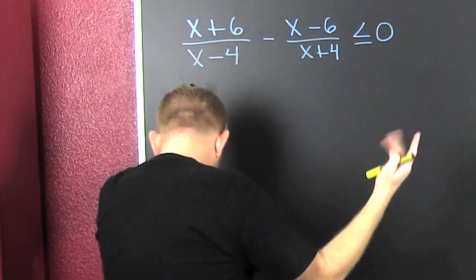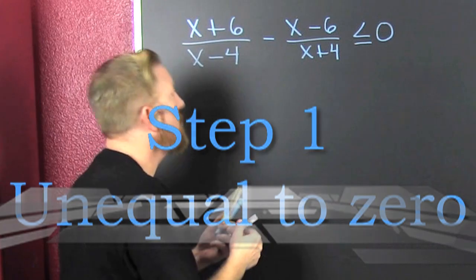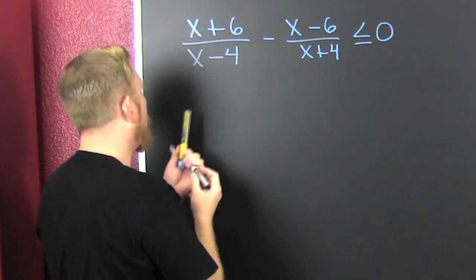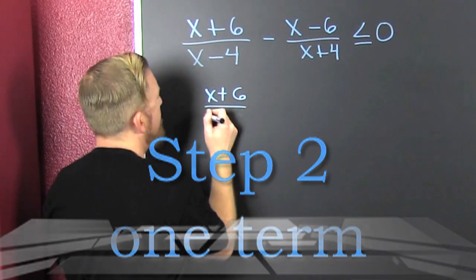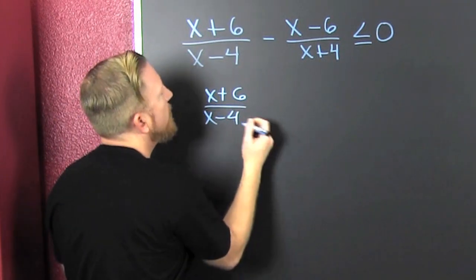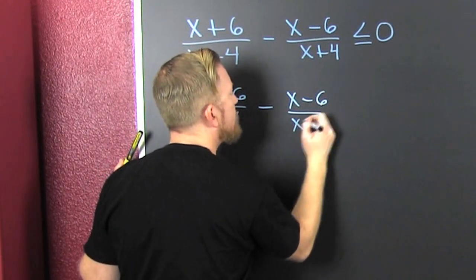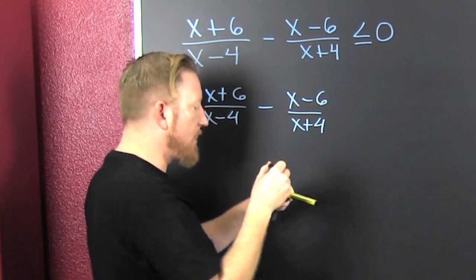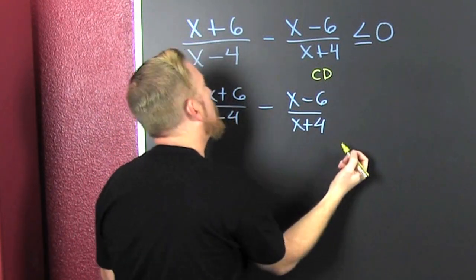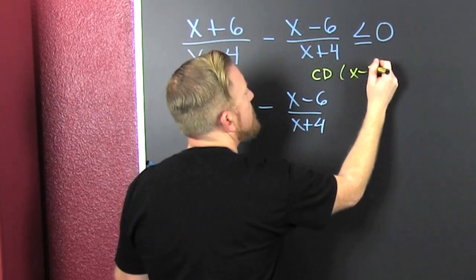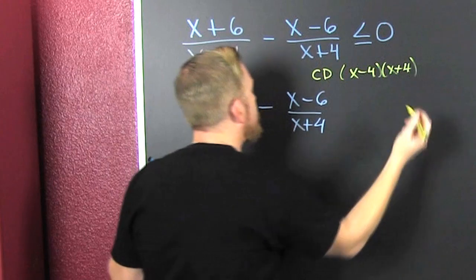We got them all on one side. Now let's get one fraction. So we're gonna take that guy - that x plus 6 divided by x minus 4 - and then that guy - that x minus 6 divided by x plus 4. And we gotta get a common denominator. What would a common denominator of all the denominators be? That's x minus 4 and x plus 4.